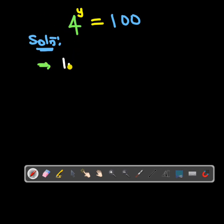So we will have log 4 to the power of y to be equal to the log of 100. Why did we do that? Because there is a rule that says